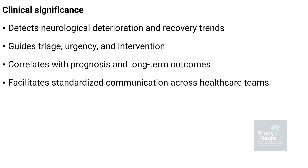The Glasgow Coma Scale plays a vital role in neurological assessment and patient management. It helps detect early signs of deterioration or track recovery trends over time. Clinicians use it to guide triage decisions, determine urgency of care, and prioritize interventions in trauma and critical care settings. The GCS score also correlates strongly with prognosis and long-term outcomes, helping predict the likelihood of survival or neurological recovery. Most importantly, it provides a standardized language that allows doctors, nurses, and paramedics worldwide to communicate a patient's neurological status clearly and consistently.